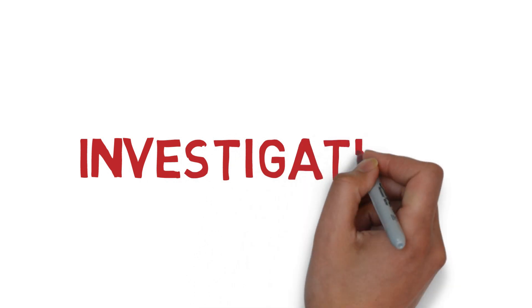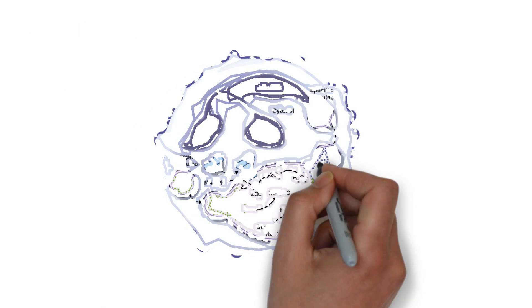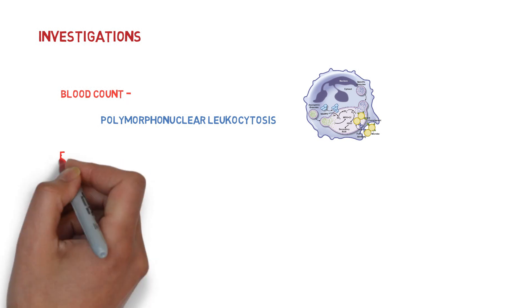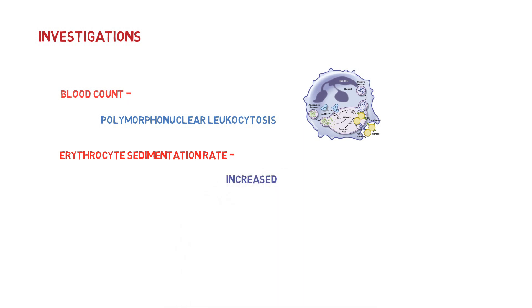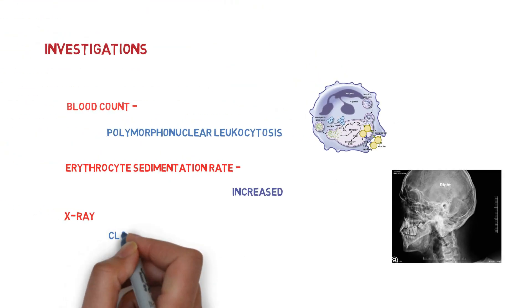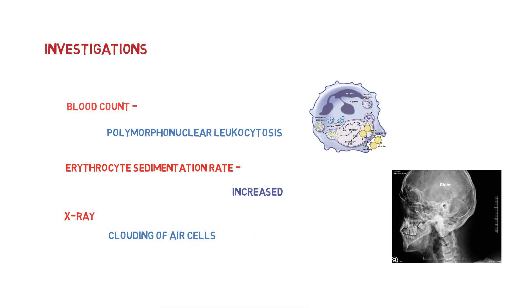What investigations are needed for acute mastoiditis? Blood count shows polymorphonuclear leukocytosis and the erythrocyte sedimentation rate is usually raised. On X-ray of the mastoid or CT scan of the temporal bone, there is clouding of the air cells due to collection of exudate in them, and the bony partitions between these air cells become indistinct.